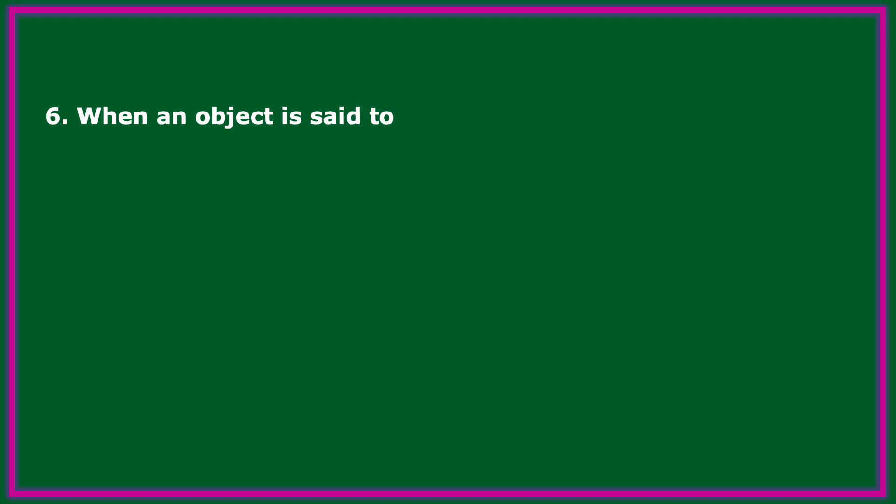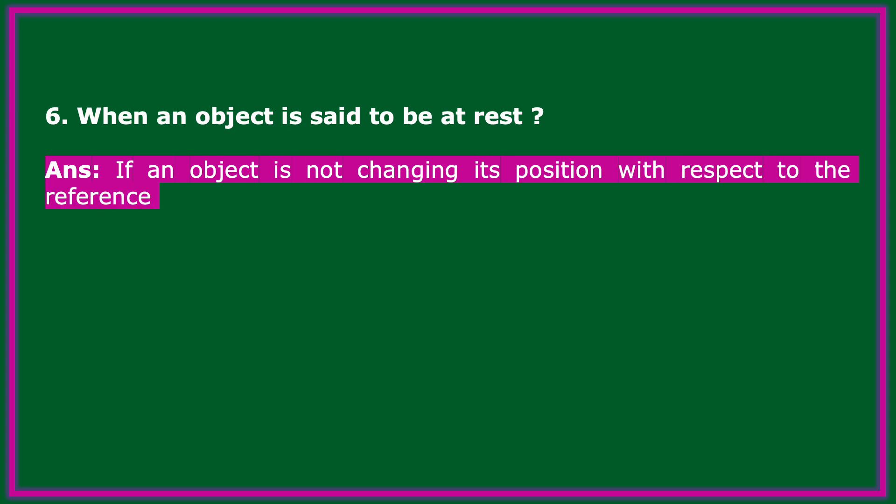When is an object said to be at rest? If an object is not changing its position with respect to a reference point over time, it is said to be at rest. We compare it with something fixed, called a reference point. For example, if you are sitting in a chair, you are at rest with respect to the chair and the room.